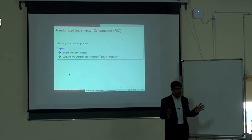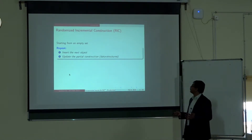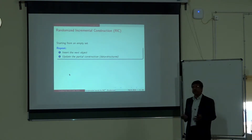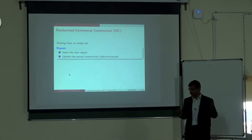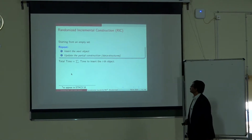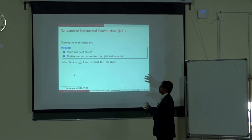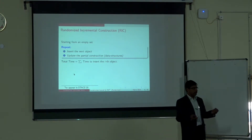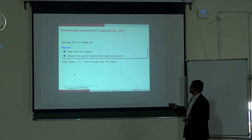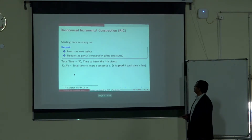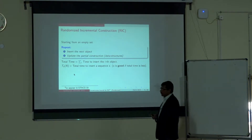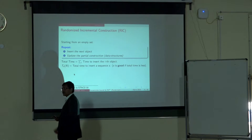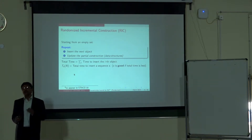You insert the next object to obtain the partial construction starting from an empty section. There is nothing very deep about it. You look at it first and feel that it's too simplistic to be of any value, in the sense that you can't be deeply efficient. So the total time, in a very abstract setting, is the sum over the time it takes for the i-th step. The twist is that it's pretty dependent on the sequence in which you insert objects.